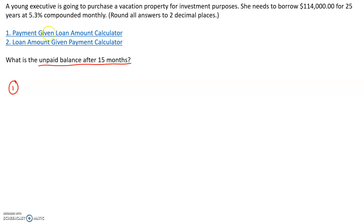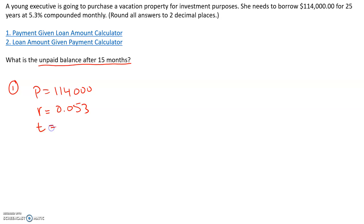We have a loan of $114,000, so we want to find the payment given the loan amount. We're going to use the 'payment given loan amount' calculator. She is borrowing $114,000 at an interest rate of 5.3%, which is 0.053 in decimal form. Remember to divide any percent by 100 to get the interest rate in decimal form. She is going to pay this off in 25 years — that's the term of the loan.